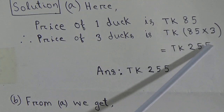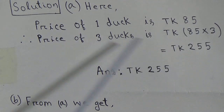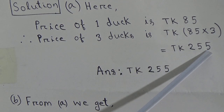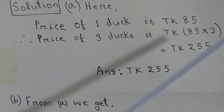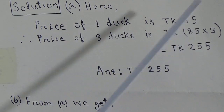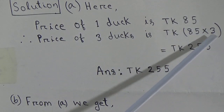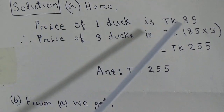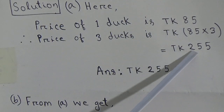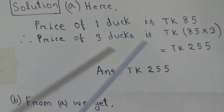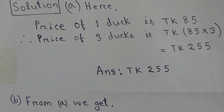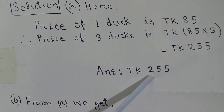5 threes are 15. From 15, we write 5 and carry 1 to the tens place. Now, 3 eights are 24. 24 plus 1 is equal to 25. That means the price of three ducks is TK255, and the answer is TK255.